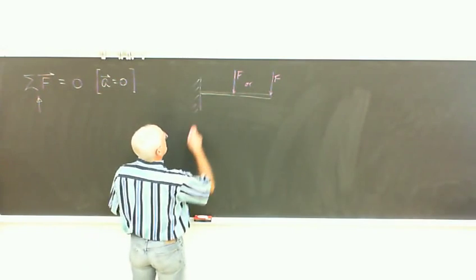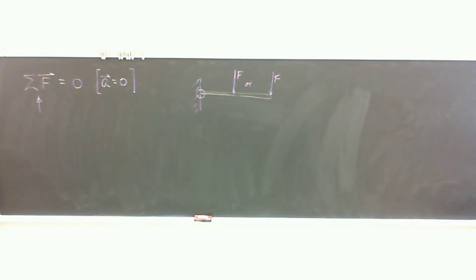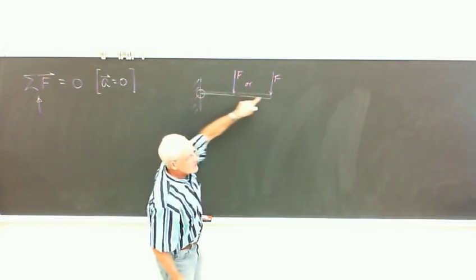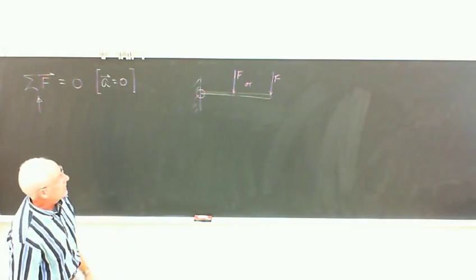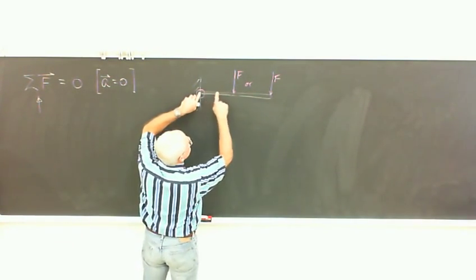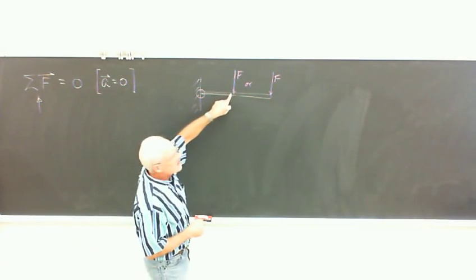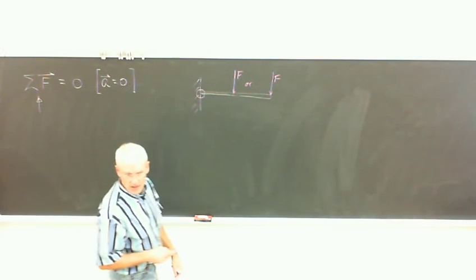What we're worried about is what's going on back at the wall, because that's what's going to keep this thing in static equilibrium. If this board wasn't attached to that wall, it's not going to stay where it is, and that's the requirement of this class — things stay where they are. As you go farther and farther out, there's a greater tendency for that board to snap off at the wall. If you go out to the end of a tree limb, it's much more likely to break than if you stay near the tree.